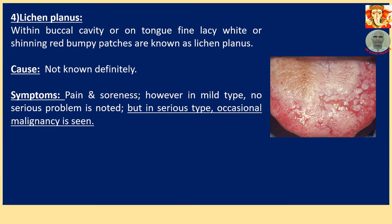Number 4: Lichen Planus. Within the buccal cavity or on the tongue, fine lacy white or shining red bumpy patches are known as lichen planus — shown on the right-hand side. Cause is not known definitely. Symptoms: Pain and soreness. However, in mild type, no serious problem is noted. But in serious type, occasional malignancy is seen — meaning it may turn into oral cancer.